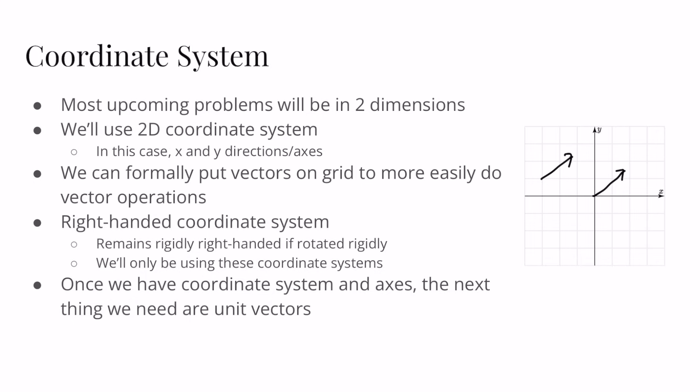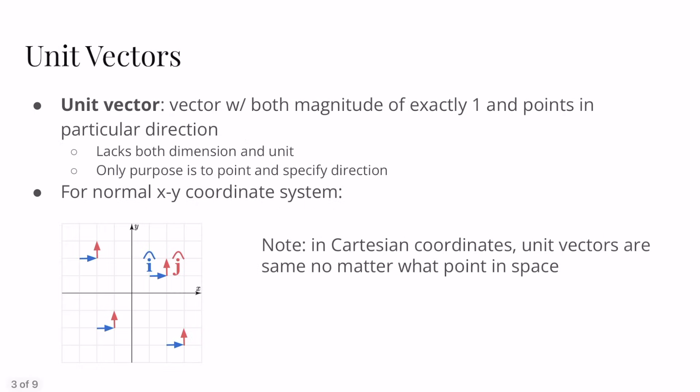We also use a right-handed coordinate system, and we'll only be working with these coordinate systems here. Once we have the coordinate system and our axes defined — in this case the x and y axes — the next thing we need are the actual unit vectors. Unit vectors are vectors with both a magnitude of exactly one and pointing in a particular direction. That's why we call it the unit vector: it only has a magnitude of one, it lacks a dimension and a unit, and its only purpose is to point and specify a direction.